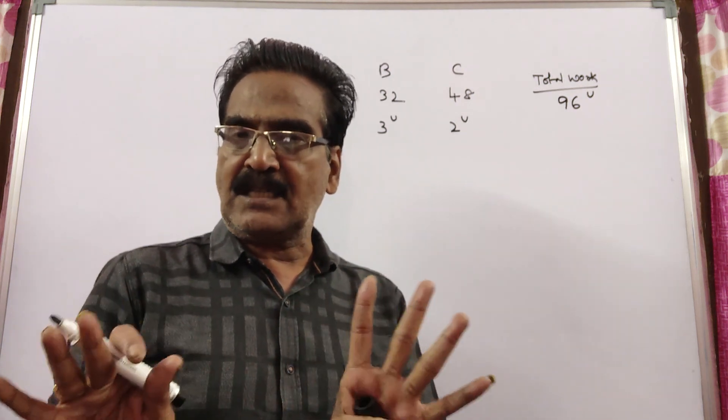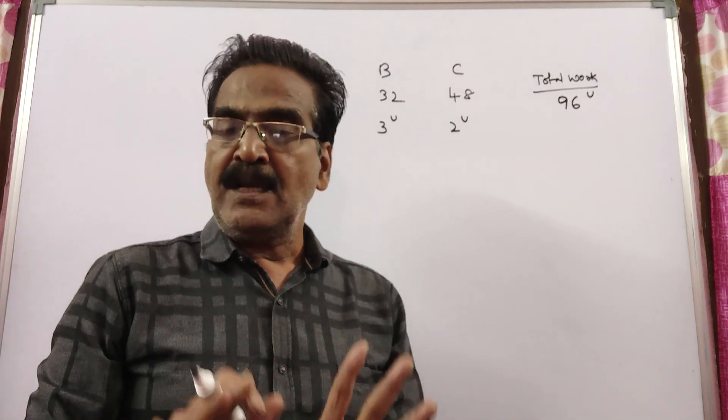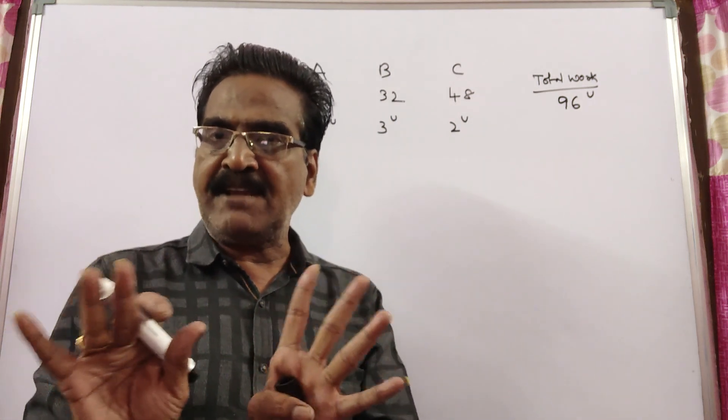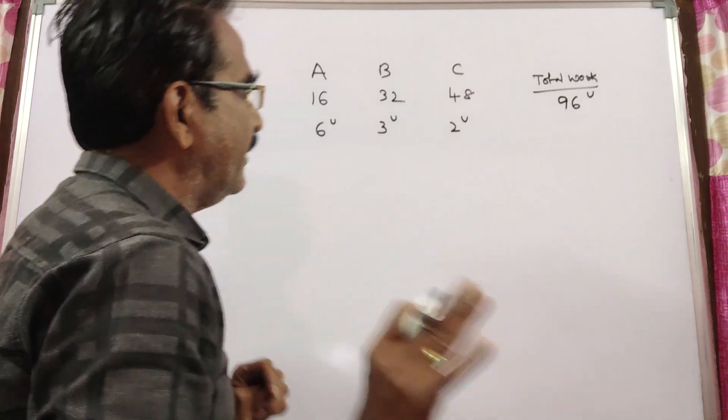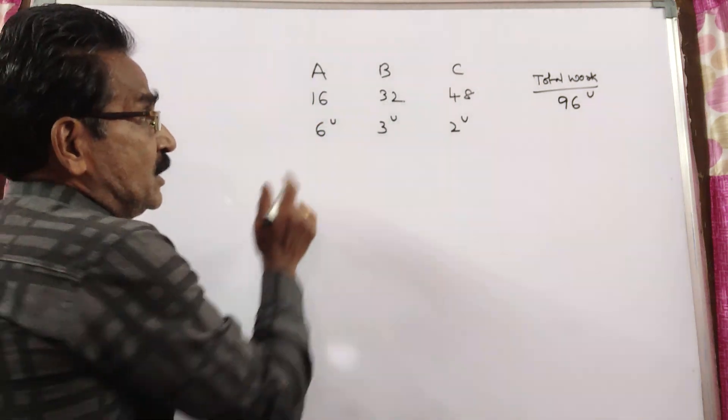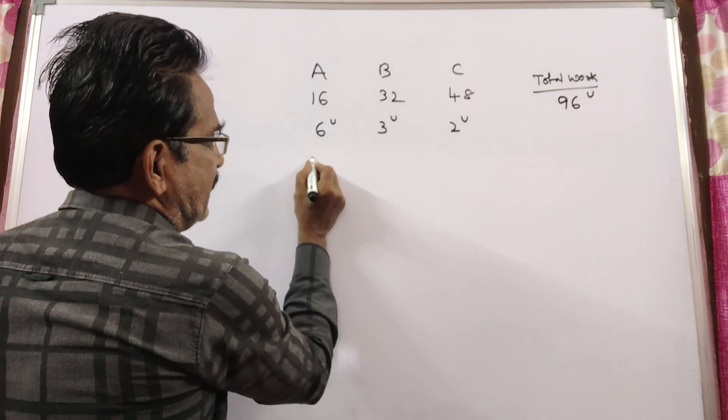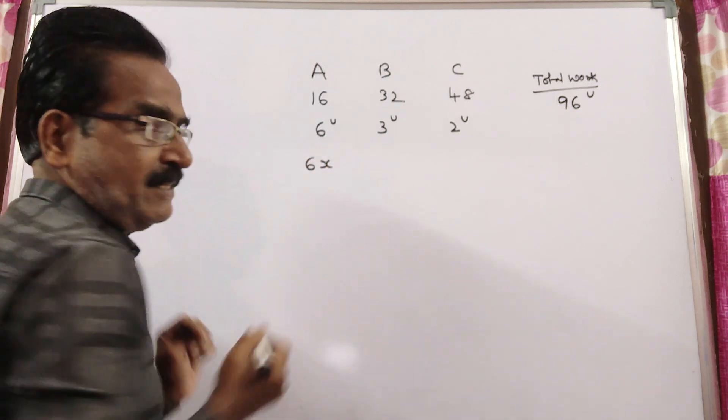Friends, say the total work lasted for X days. Now, A worked all the X days. A did not leave in the middle. So, in X days, A can complete X into 6, that is 6X units of work.